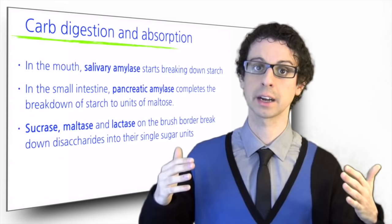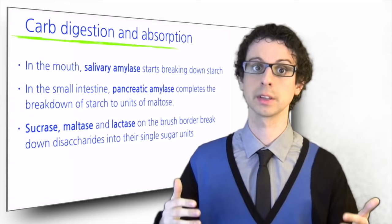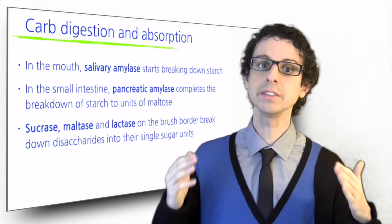Enzymes located on the brush border then work on disaccharides, breaking them down into their single sugar units. Sucrase breaks down sucrose into glucose and fructose, maltase breaks maltose into two units of glucose, and lactase breaks down lactose into glucose and galactose.